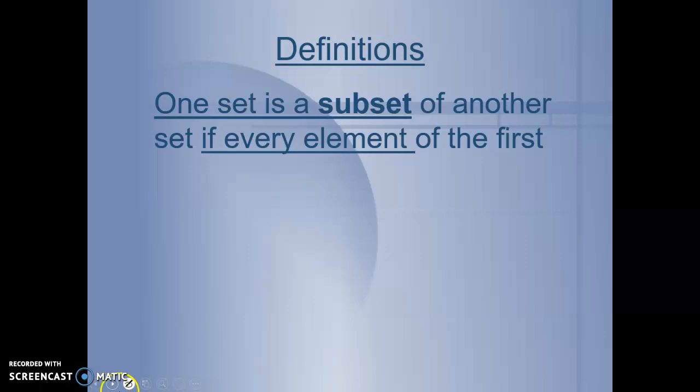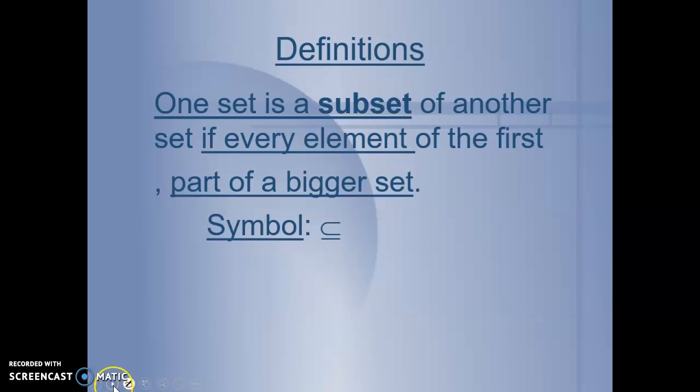One set is a subset of another set if every element of the first is part of a bigger set. We use this symbol to represent subset, kind of like a sideways U with a line under it. That means subset. A is a subset of B would be represented with this A, sideways U with a bar under it, B. A is a subset of B. We can represent that pictorially or graphically with this big circle with B and a small A inside showing a part of B.